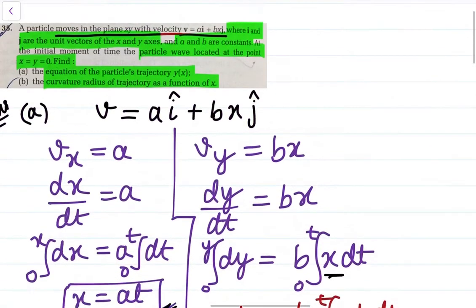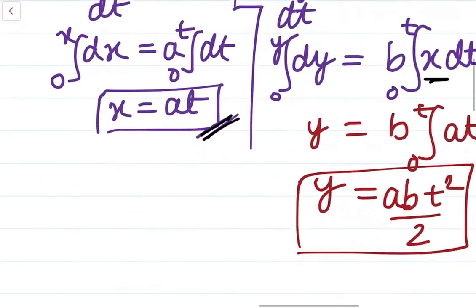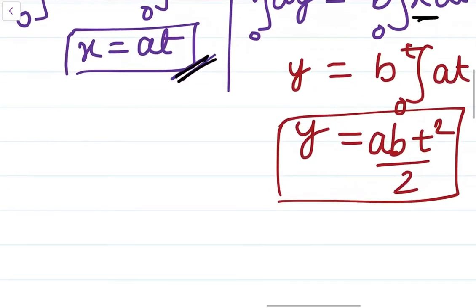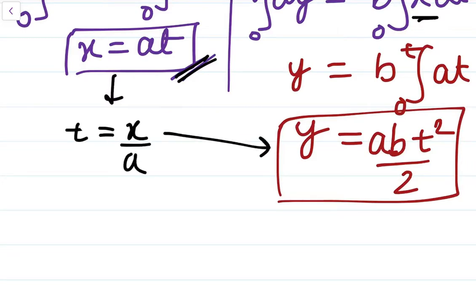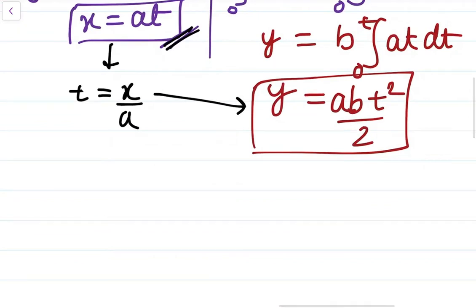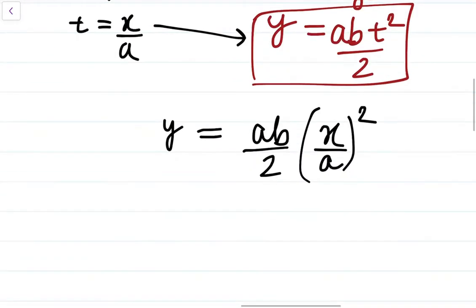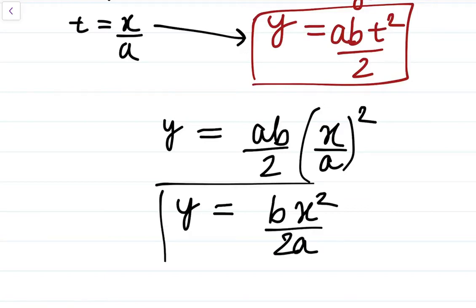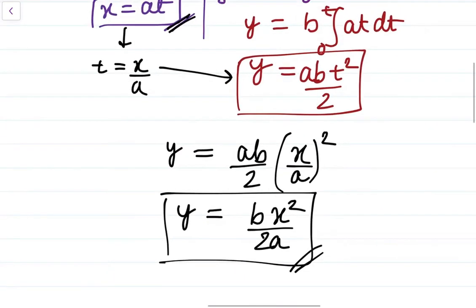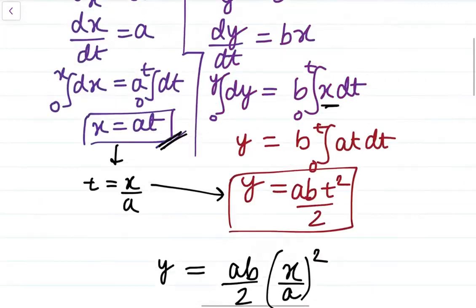To find the equation of the particle's trajectory, we substitute t = x/a into the expression for y. So y = ab/2 · (x/a)², which simplifies to y = bx²/(2a). This is the equation of trajectory. Although this part belongs to kinematics, it was included in the question.